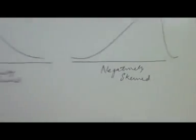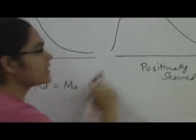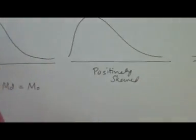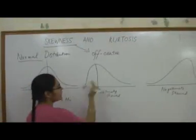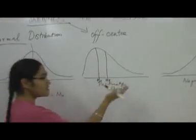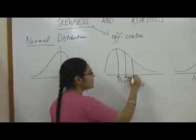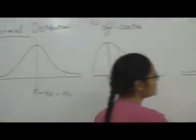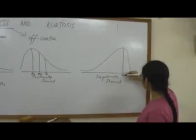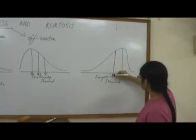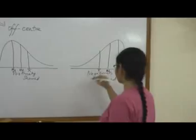Now, contrary to the normal distribution where the mean, the median and the mode coincide, the three measures of central tendency are scattered in both these kinds of distributions. You will find the mode here — the mode is the point where the highest frequency occurs. The median is somewhat to the right of the mode; the median divides this area into two equal halves. While the mean lies to the right of the median. Similarly, in a negatively skewed distribution, these three measures of central tendency are dispersed: the mode is here, the median is somewhat to the left of it, and the mean is to the left of the median.